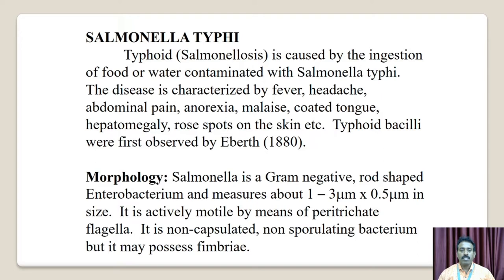Morphology. Salmonella is a gram-negative, rod-shaped organism. It is an enterobacterium and measures about 1 to 3 micrometers in length and 0.5 micrometers in diameter. It is actively motile by means of peritrichous flagella. It is non-capsulated and non-spore-forming bacteria but it may possess a fimbria.